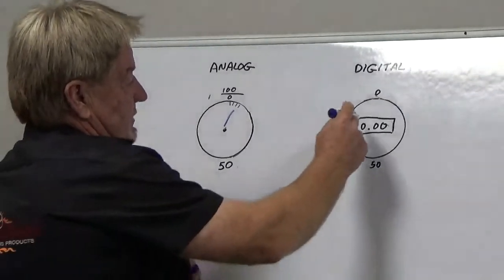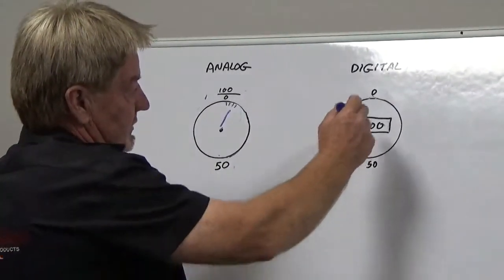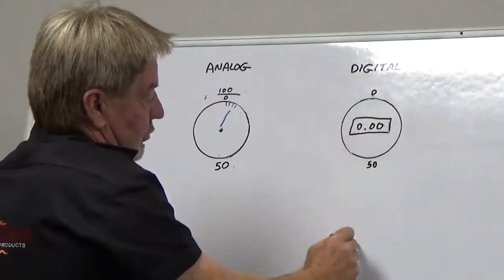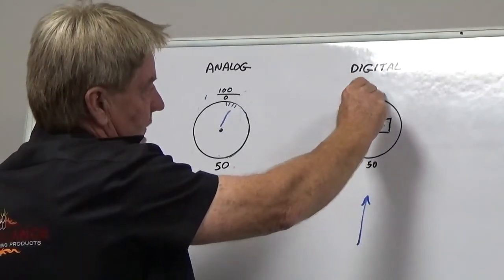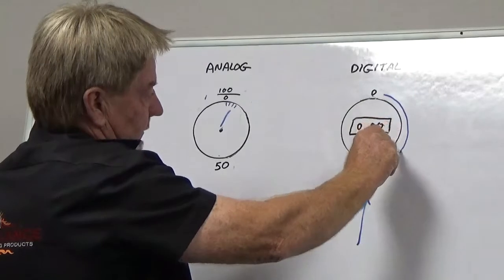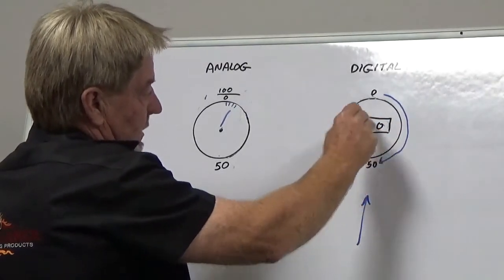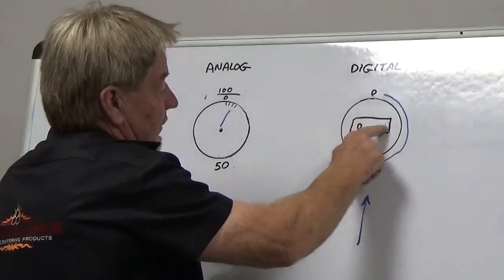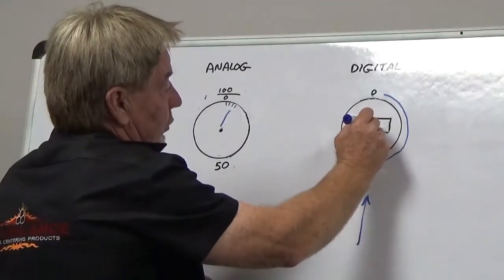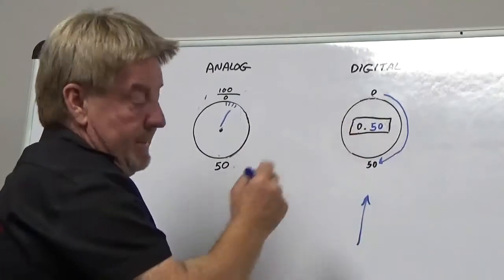0.00, so as I'm pushing up the plunger, visualize kind of a needle in your head going around. So as I go around, we're pushing our plunger up, and I hit here, that's halfway, 50 thousandths. So what you're going to see here is 0.50.